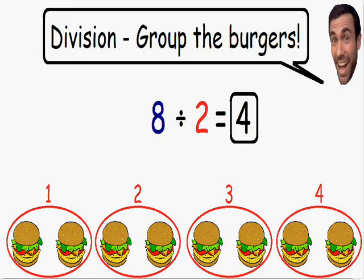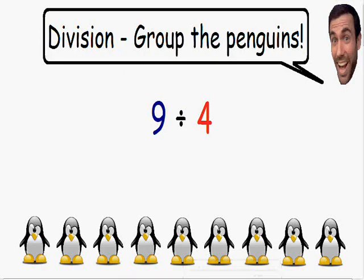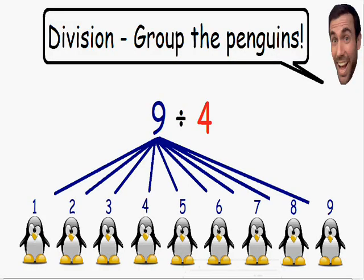But let's go over an even harder example. Here in this example we have 9 divided by 4. This example is a little different than our first two, and you'll see why once we start making our groups. We have the number 9, which is why we have 9 penguins. And these 9 penguins are being divided by 4, so we have to make groups of 4.